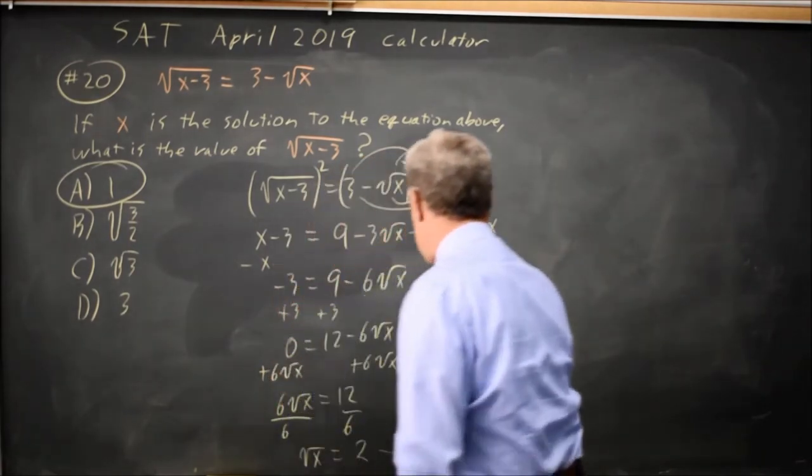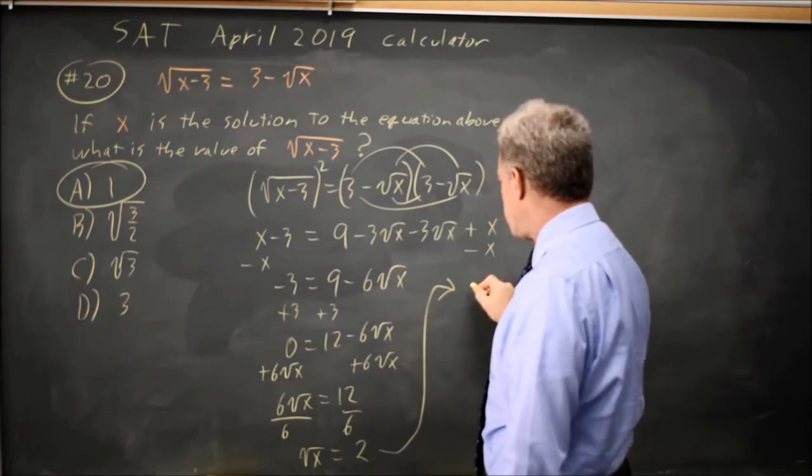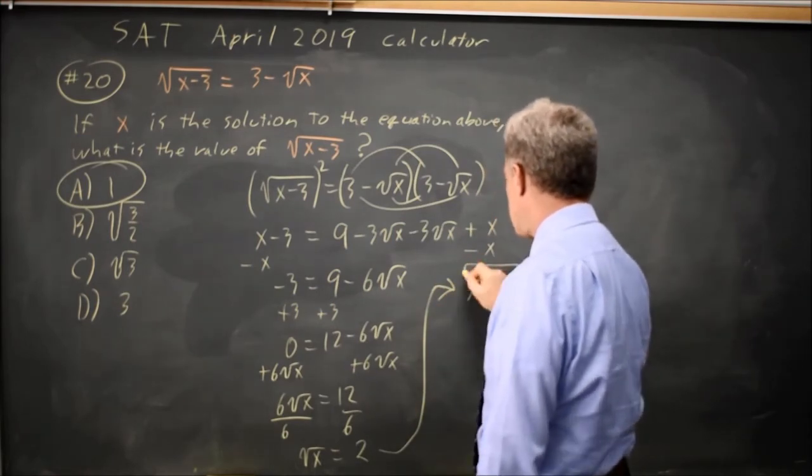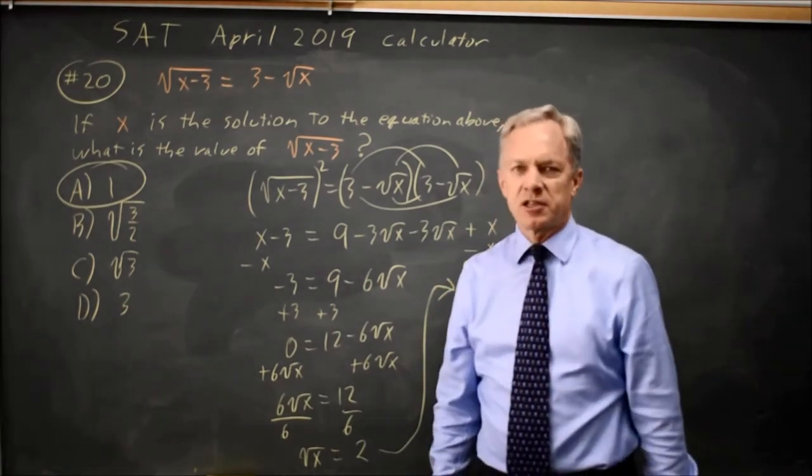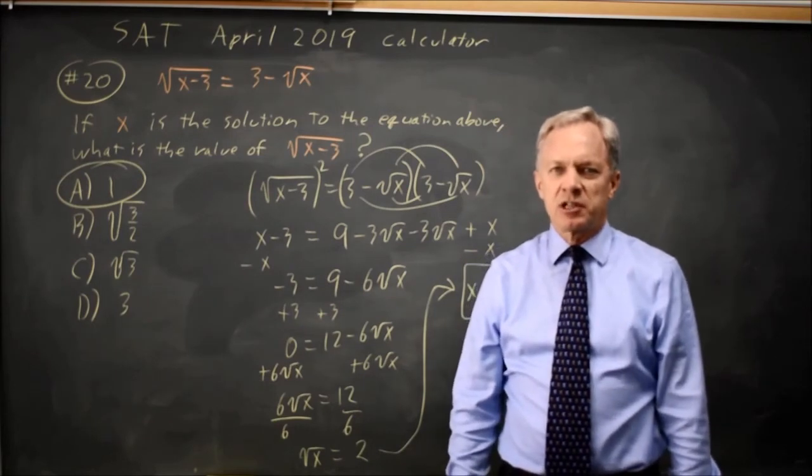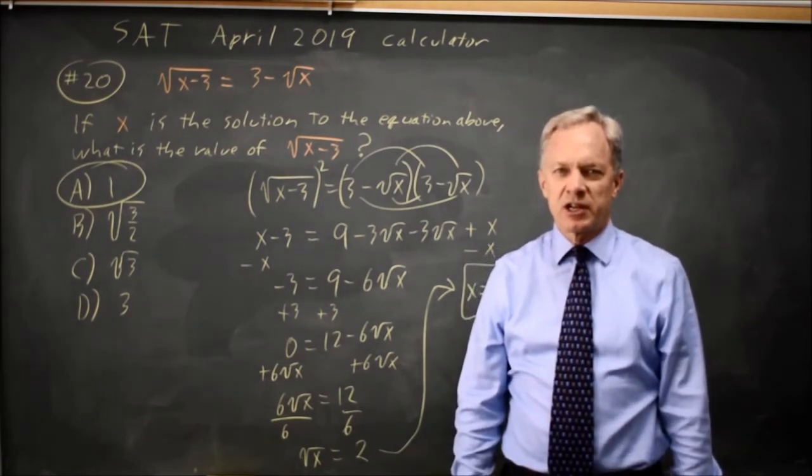Squaring both sides to get rid of the square root, I get x equals 4. Same thing I got on the graphing calculator. I strongly prefer doing the calculator rather than the algebra. It's faster.